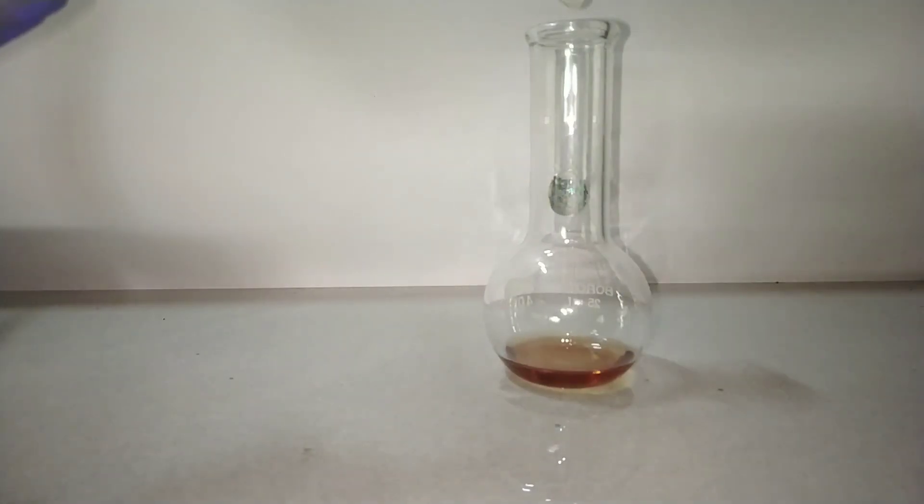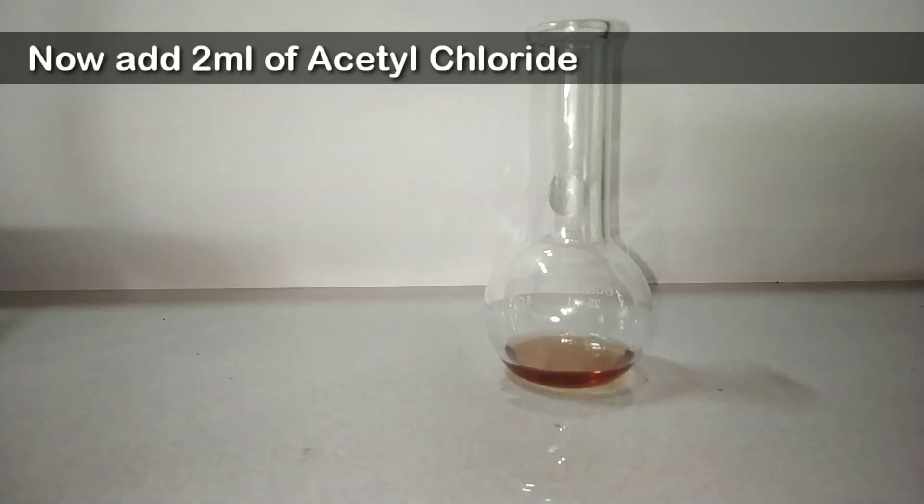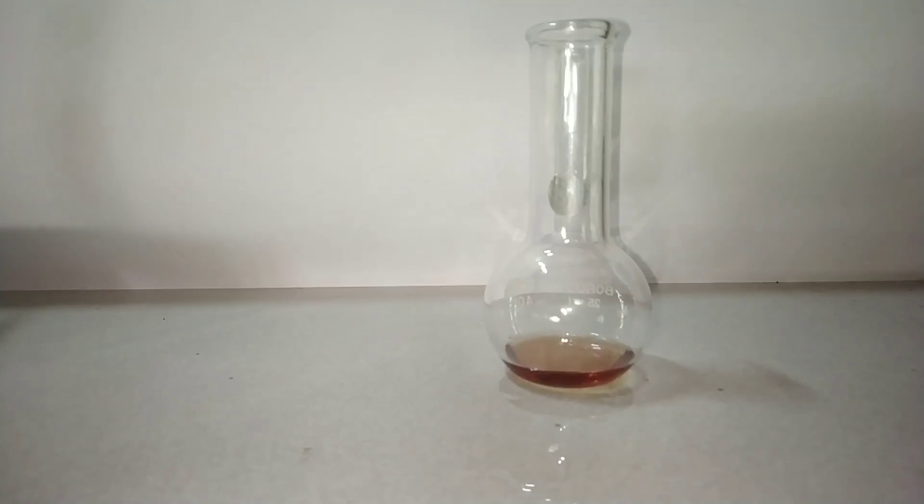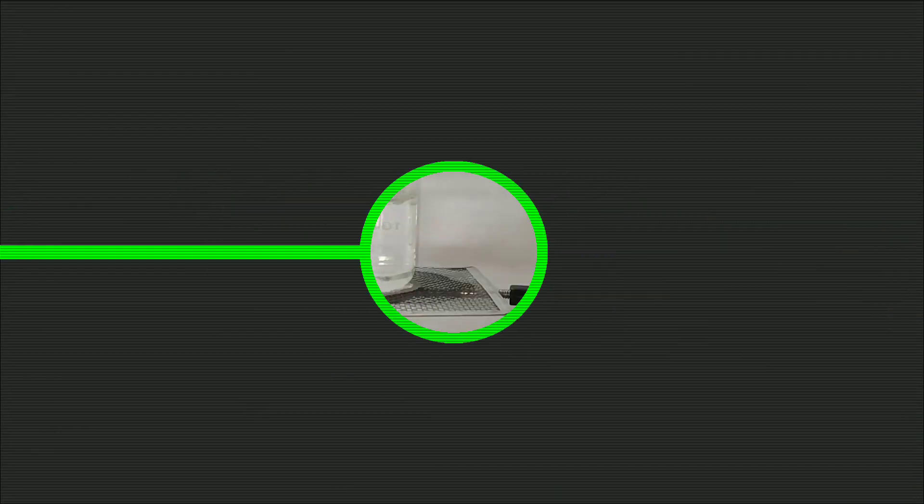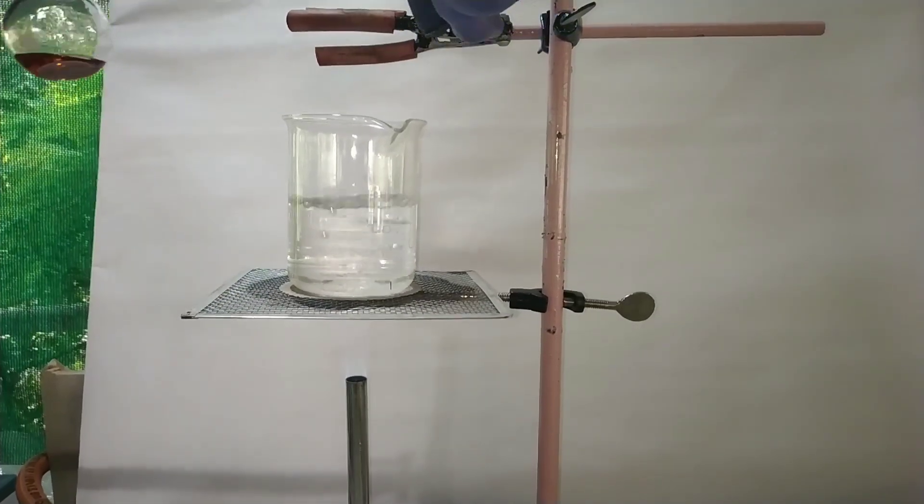Now we will be adding 2 ml of acetyl chloride. Add the acetyl chloride in small quantities as temperature can rise up while adding it. Be very careful with acetyl chloride as it fumes in moist air and its vapors are toxic.